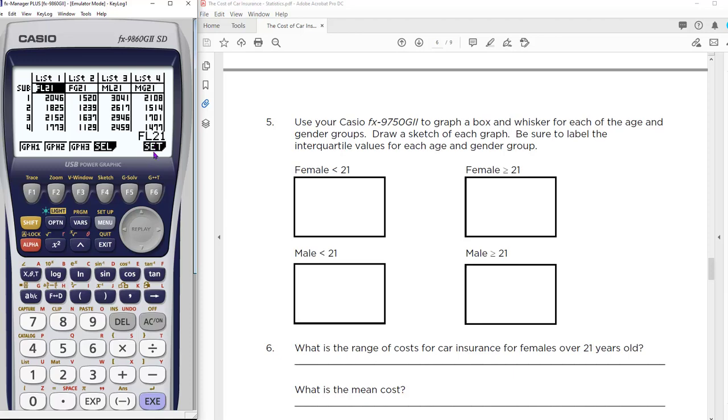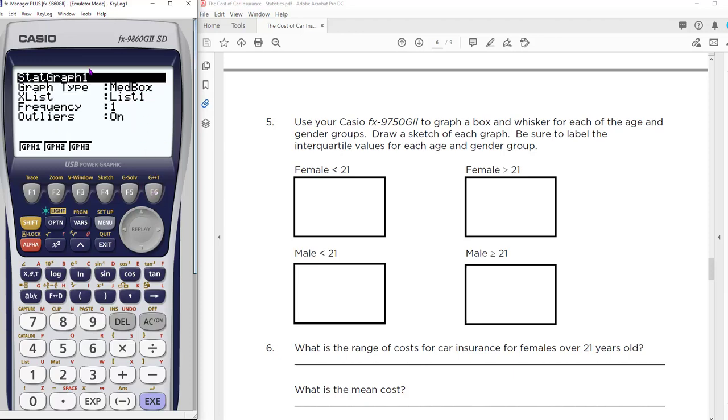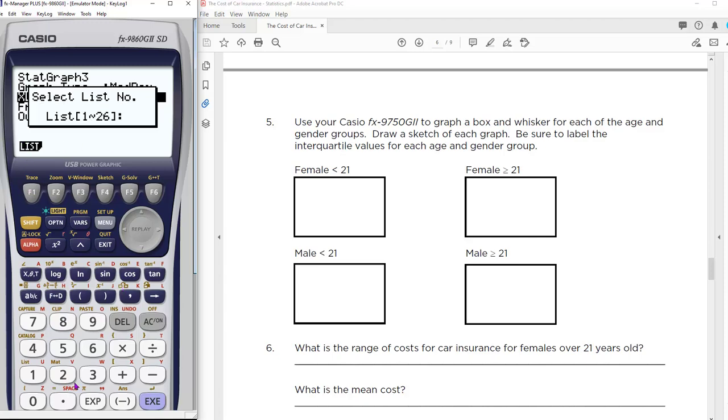I'm not ready to draw yet because I haven't defined graph three. Let's set up. Hit set F6 and set up graph three. Graph three will be a box plot. I'll choose F6 to see more options, and F2 is box plot. Once I select box plot, I only have one list. Right now it's pulling from list one, but I'm looking for males under 21 from list three. I'll hit F1 and put in three. Turn outliers on.